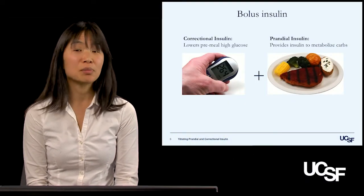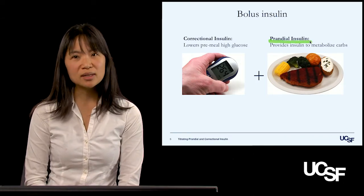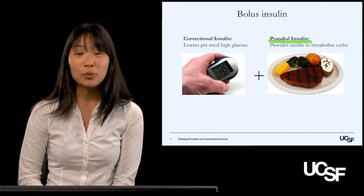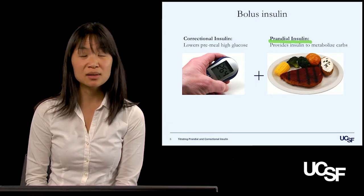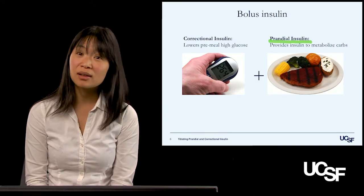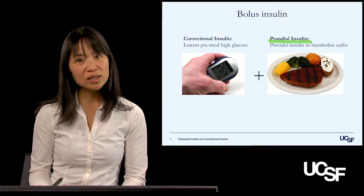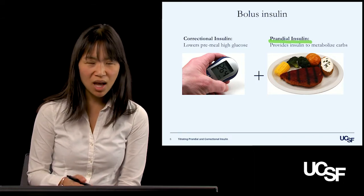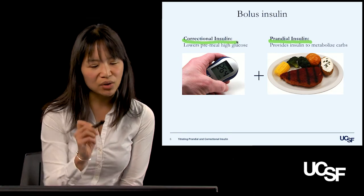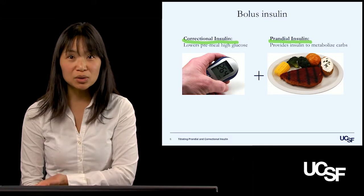Bolus insulin actually has two parts. The first part is prandial insulin, which is the insulin required to metabolize the carbohydrates eaten at a meal. We traditionally think of just carbohydrates when dosing insulin, however very recent guidelines ask us to consider the glycemic effect of proteins and fats as well. The second portion is correctional insulin, which is the insulin required to lower a high glucose to a glucose at target.